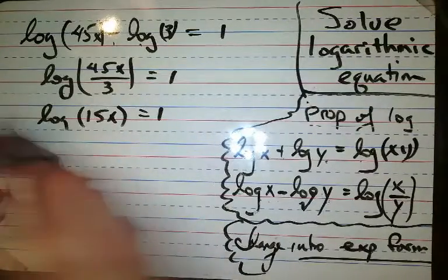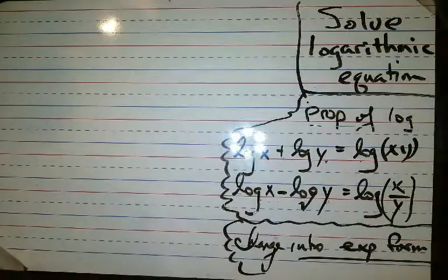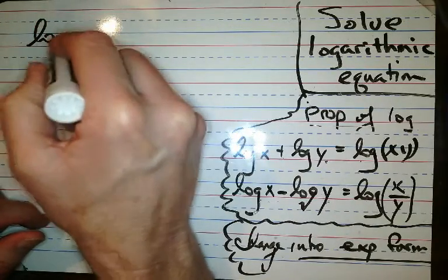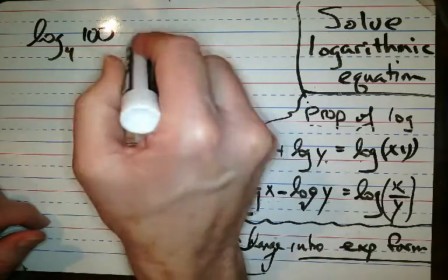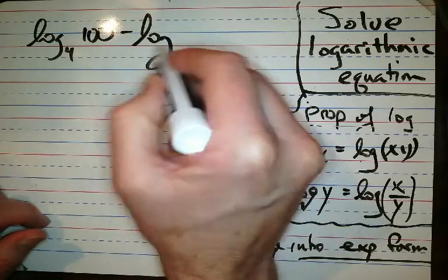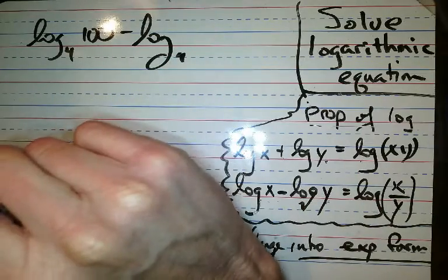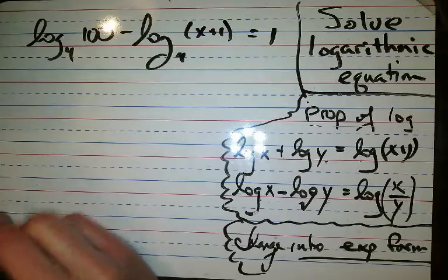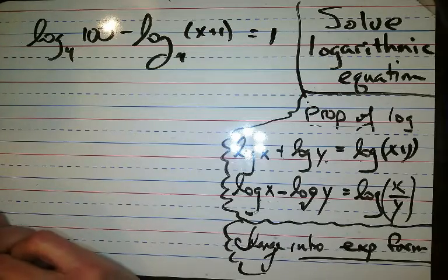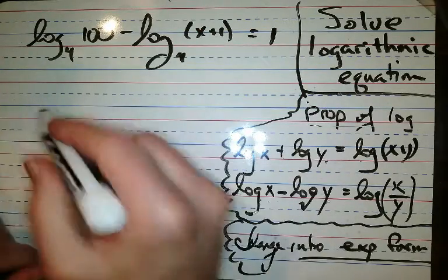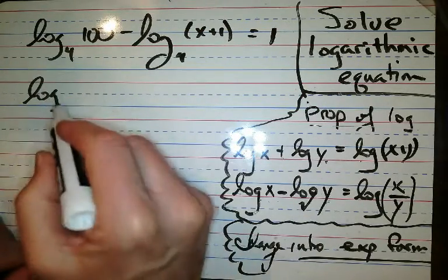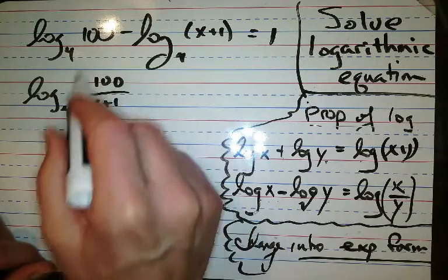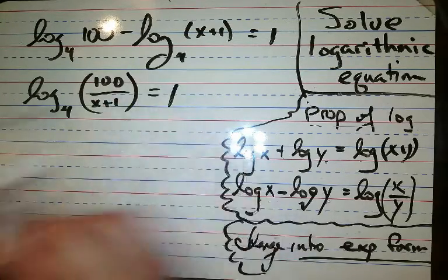Let's do it again. Let's do another subtraction. Then we'll do a multiplication. How about this one? Log base 4 of 100 minus log base 4 of x plus 1 equals 1. Oh my goodness! Well, log subtraction means a fraction. Log base 4, 100 over x plus 1 equals 1.